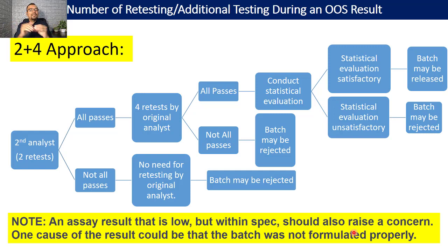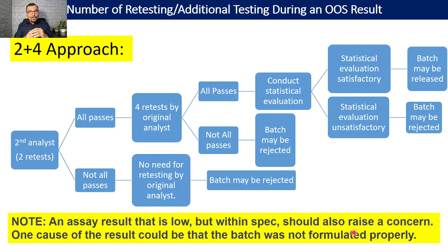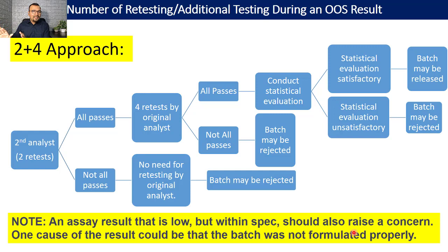The same applies to related substances as well. If results are found very close to the upper side of the related substances specification, the product may fail for related substances during a stability study. Many companies also place batches released through additional testing into stability studies.